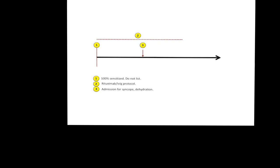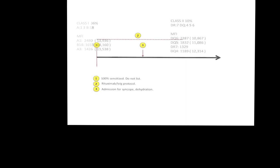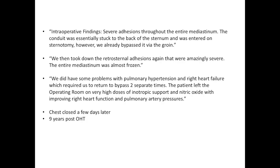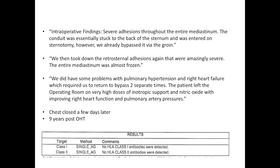She gets admitted with syncope and dehydration. While there, we check her antibodies and she's down to 36% — we're excited because this gives us an avenue, and we list her. After about six months waiting at home, a heart becomes available. Intraoperatively: severe adhesions throughout the mediastinum, the conduit stuck to the back of the sternum, entered on sternotomy with femoral bypass already established. We had problems with pulmonary hypertension and right heart failure requiring return to bypass twice. She left the OR on high inotropic support and nitric oxide. Chest closed a few days later. She is now nine years post-op with no antibodies and doing well — but even an 'easy' Fontan exceeds the risk of a standard heart transplant recipient.